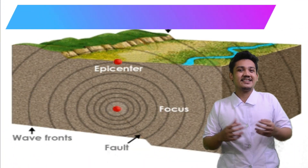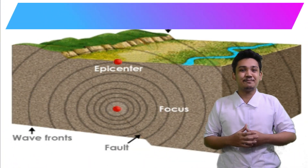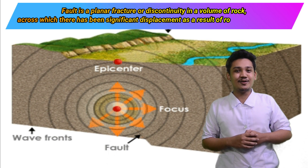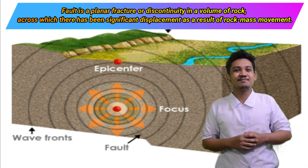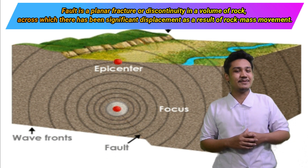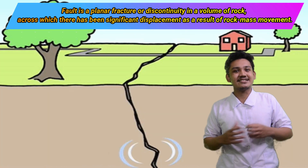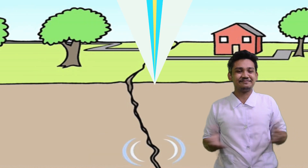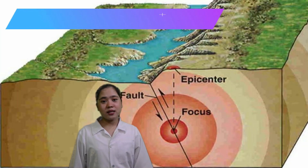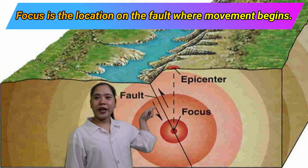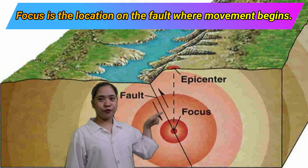Fault is a planar fracture or discontinuity in a volume of rock across which there has been significant displacement as a result of rock mass movement. Next is focus: the location on the fault where movement begins.